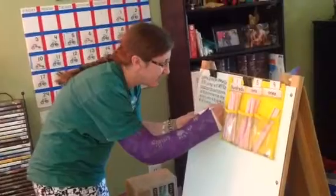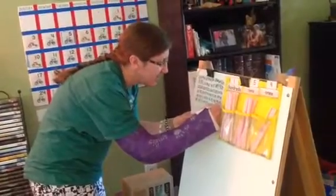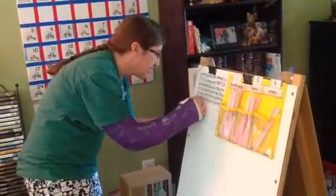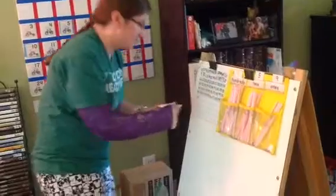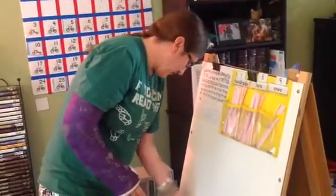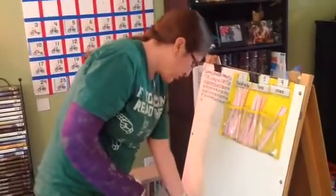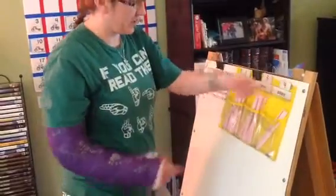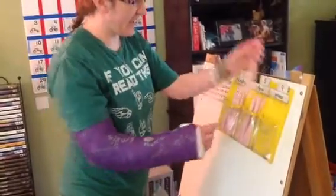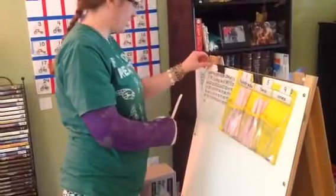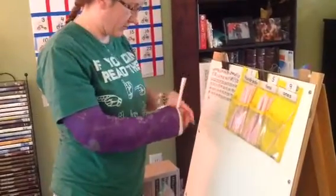I'm going to add two numbers to my hundreds chart. And I'm going to add two straws to my straw counter. That makes ten. I'm going to take the ten out and put the one in.